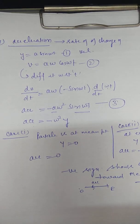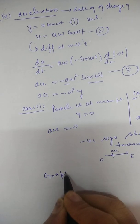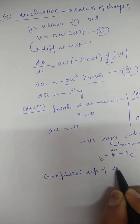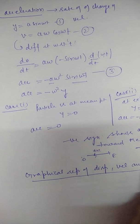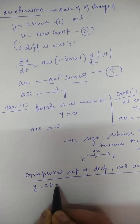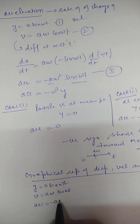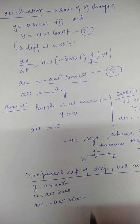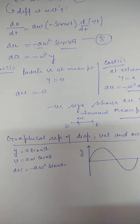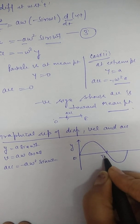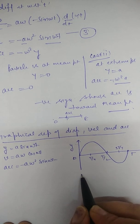Next is the graphical representation of displacement, velocity, and acceleration — very important. We have the equations: y equals A sin(ωt), v equals Aω cos(ωt), and acceleration equals minus Aω² sin(ωt). For displacement, the graph is a sine curve with time axis markers at t/4, t/2, 3t/4, and t.